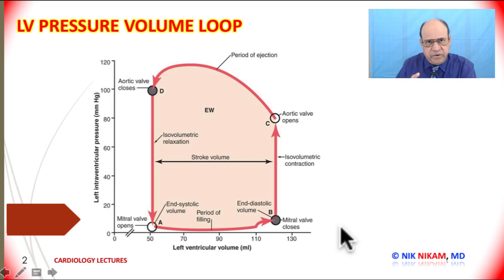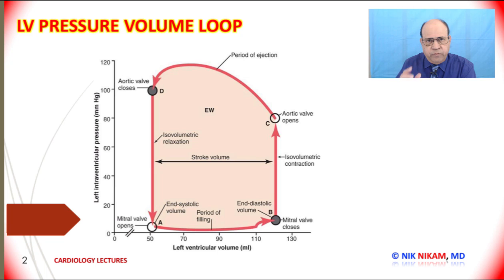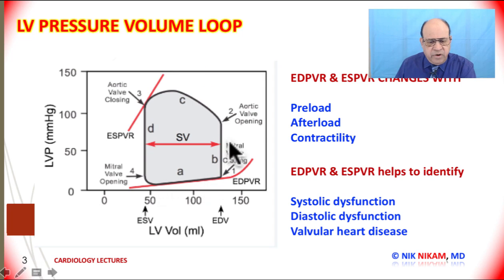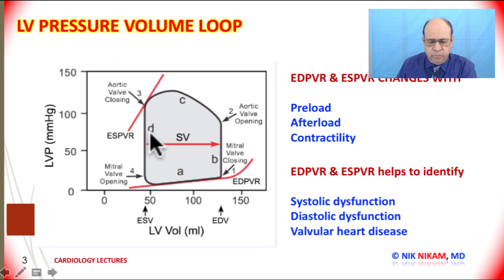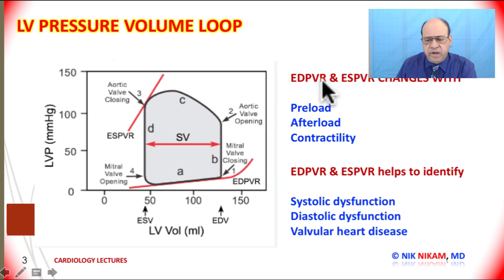Now we are beginning to concentrate more on the slope of these curves and also the distance between these two points, which gives us an idea about the stroke volume. The end diastolic pressure-volume relationship and end systolic pressure-volume relationships are important features of this loop.